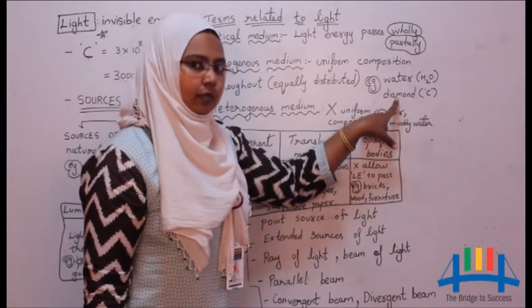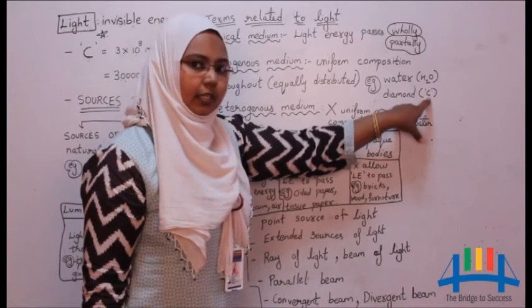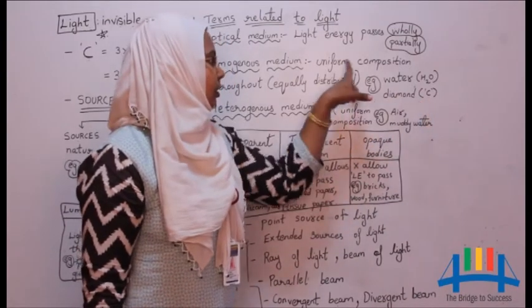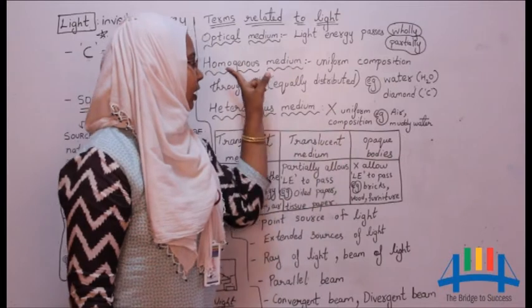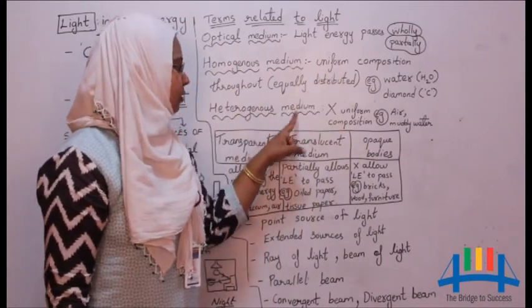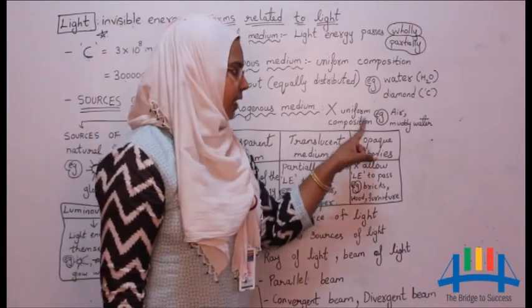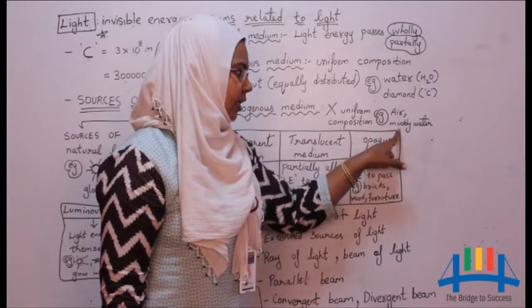Similarly, in diamond we have carbon. The carbon atoms are equally distributed. So the uniform composition thing is called homogeneous medium. The opposite of this is heterogeneous medium, which does not have uniform composition. Example: air and muddy water.